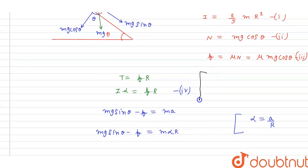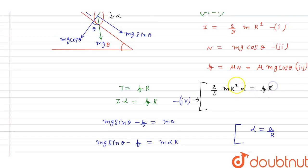Putting first equation in fourth equation, 2 by 5 MR square into alpha is equal to F into R. R got cancel out. So alpha is equal to 5 F divided by 2 M R. Now putting this alpha in this equation.